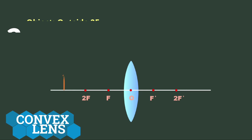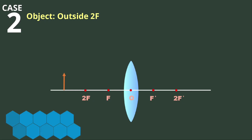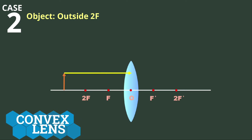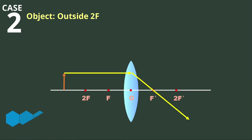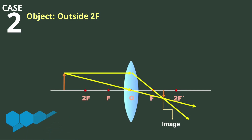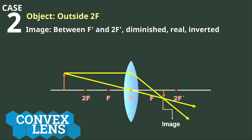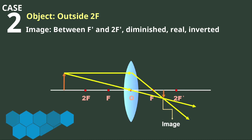In Case 2, the object is placed outside 2F. Using Rule 1 for the first ray: the light ray coming from the top of the object and moving parallel to the principal axis passes through the focal point F' after refraction. For the second ray using Rule 2: the light ray passes through the optical center and goes straight without any deviation. These two refracted rays intersect at a point between F' and 2F'. When the object is placed outside 2F, the image is formed between F' and 2F', is diminished, real, and inverted.